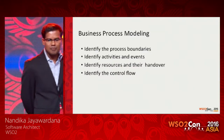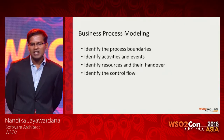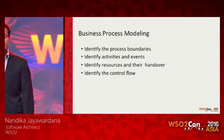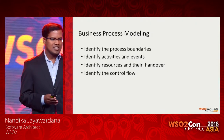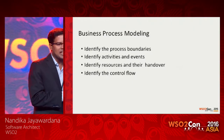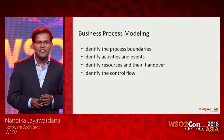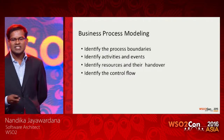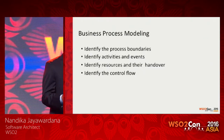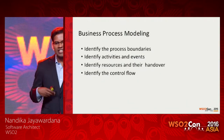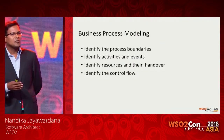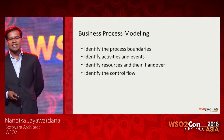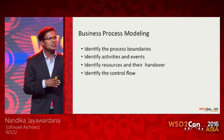In the process implementation phase, you model the business process following a set of steps. First, identify the process boundaries or scope. Next, identify the events and activities involved. Then identify the resources — the systems and people involved and how they hand over from one step to the next. Finally, identify the control flow, which defines how execution flows through the set of activities.